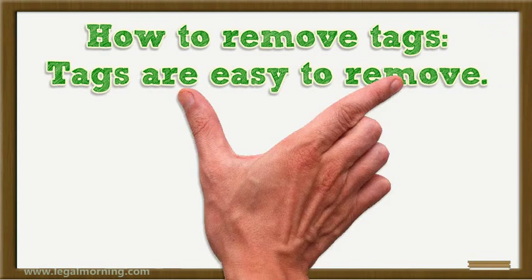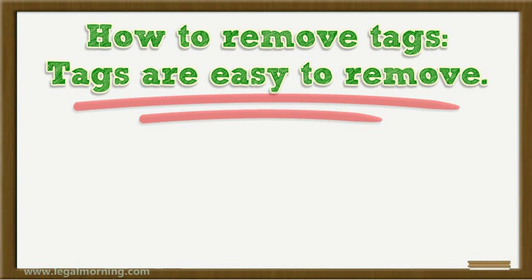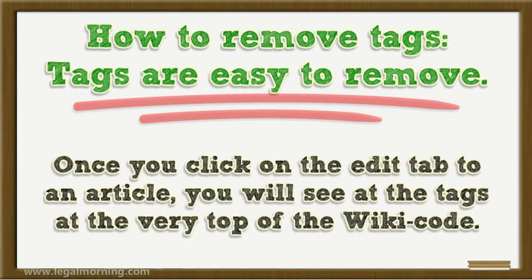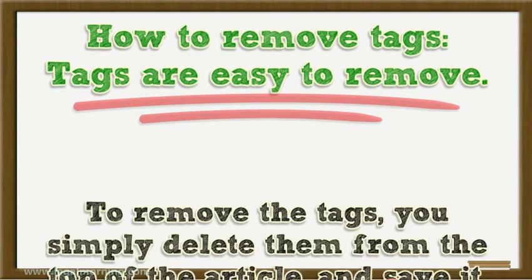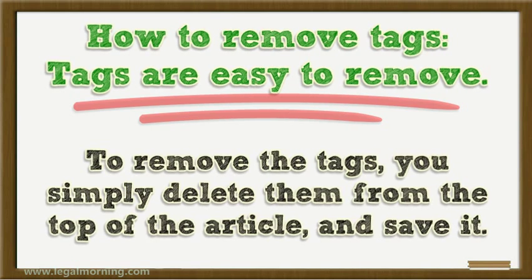How to remove tags: tags are easy to remove. Once you click on the edit tab to an article, you will see the tags at the very top of the wiki code. To remove the tags, you simply delete them from the top of the article and save it.